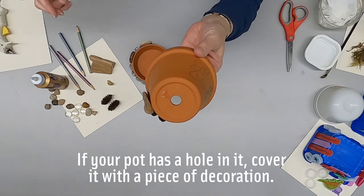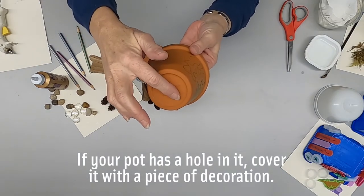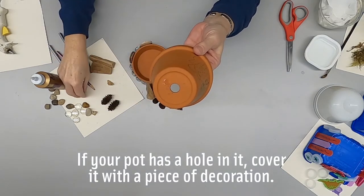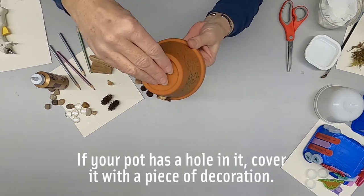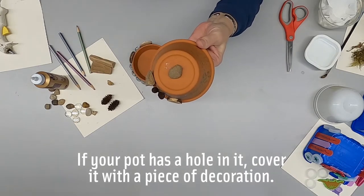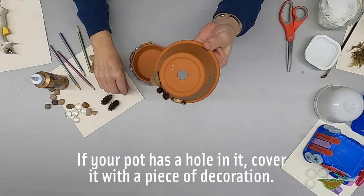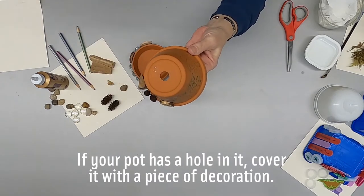If your clay pot has a hole in the top, you'll want to cover that up just to keep that rainwater off your toad. You can use one of your stones or any other pieces of material that is large enough to cover that space.